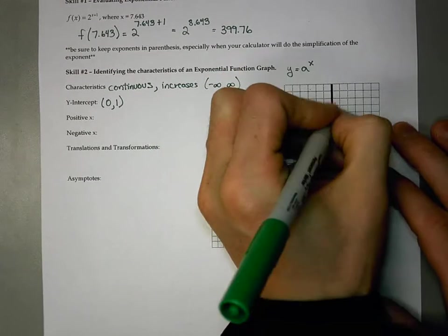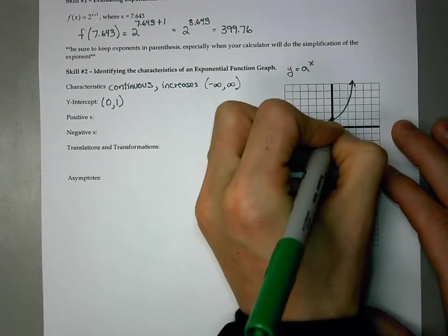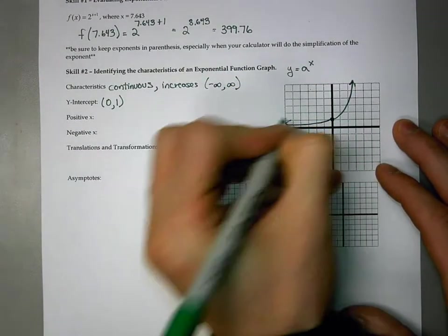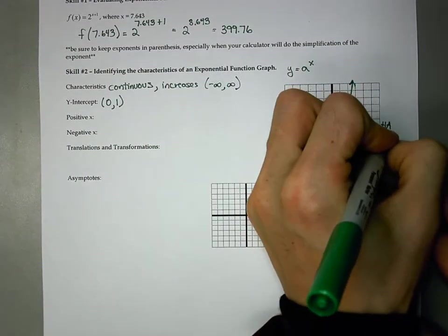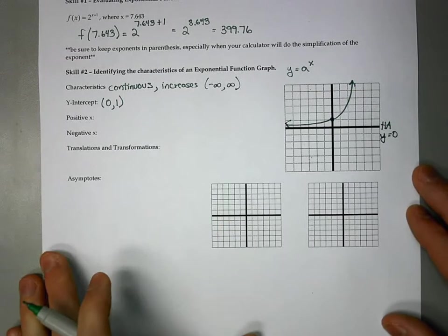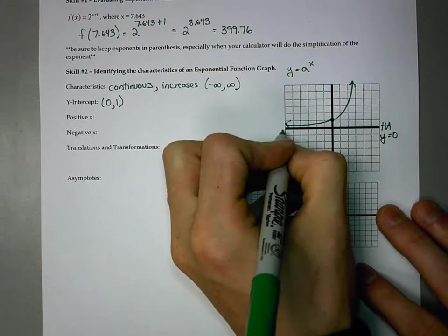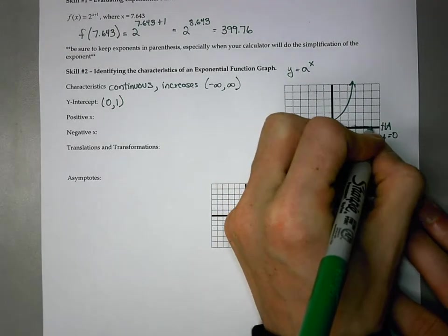So if we graph our exponential, it'll look something like that. There is a horizontal asymptote at y equals 0, so we'll draw that in right there.